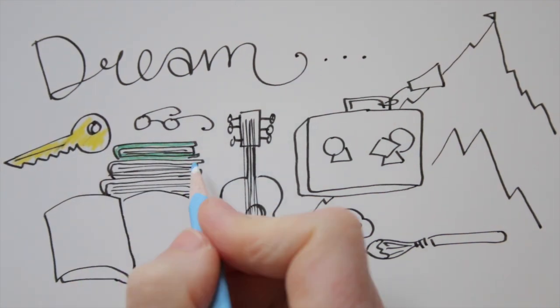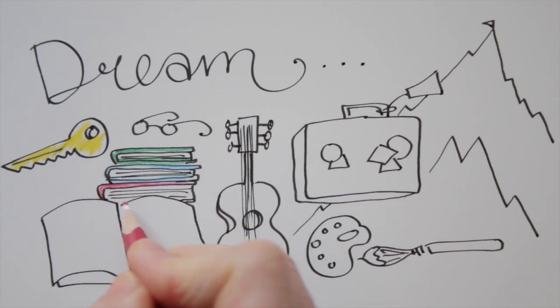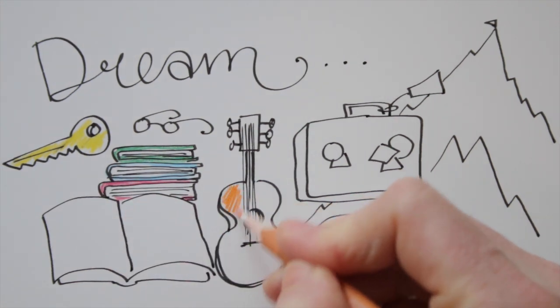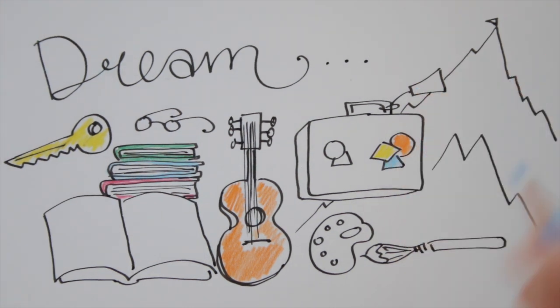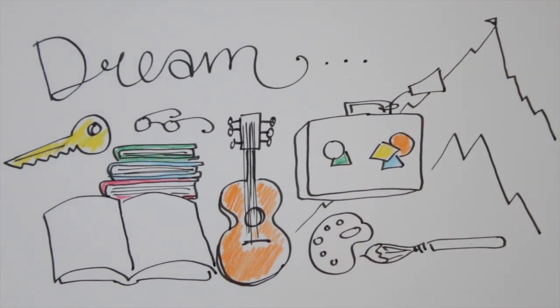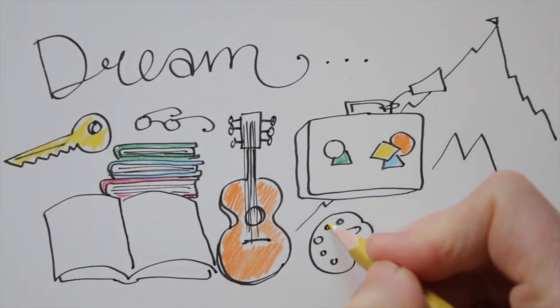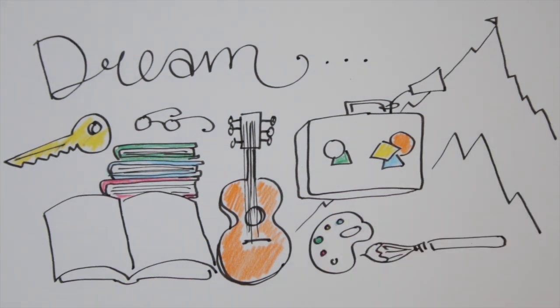Define your dreams and create your visual bucket list by finding the right icons and symbols. And add some color too. You can get back to this list regularly to see if you can check things off.